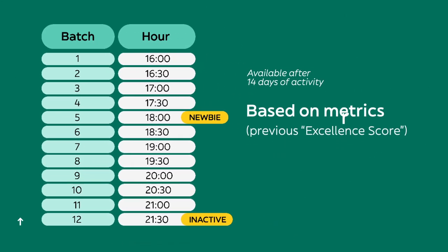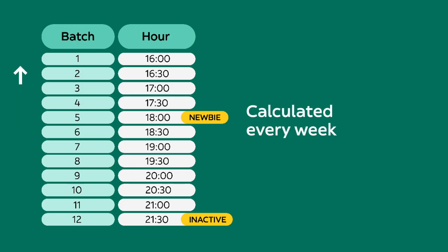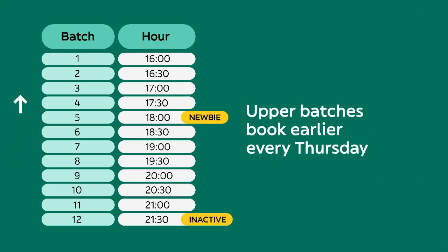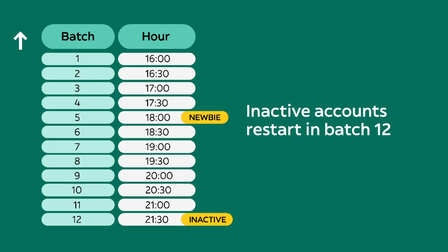Your previous excellence score will help establish in which batch you will be placed in the new app, from 1 to 12. After that, you will move batches up or down each week based on your previous week's metrics. Batch 1 has the earliest booking opportunities, and the calendar continues opening every 30 minutes for the next batches.